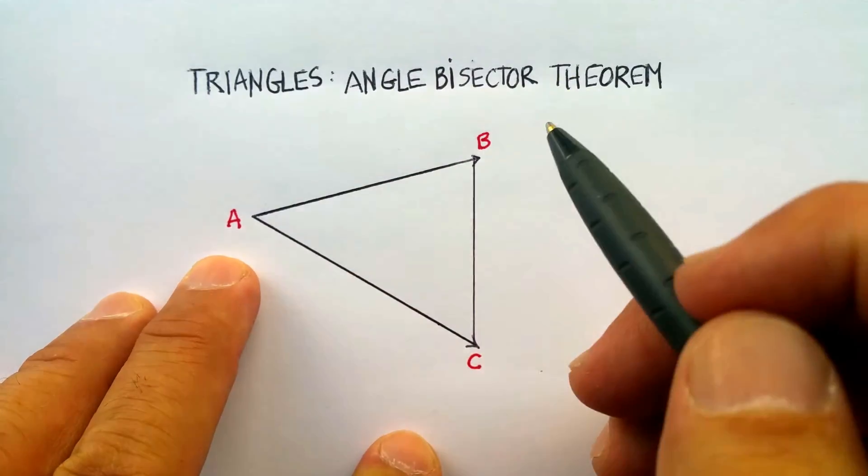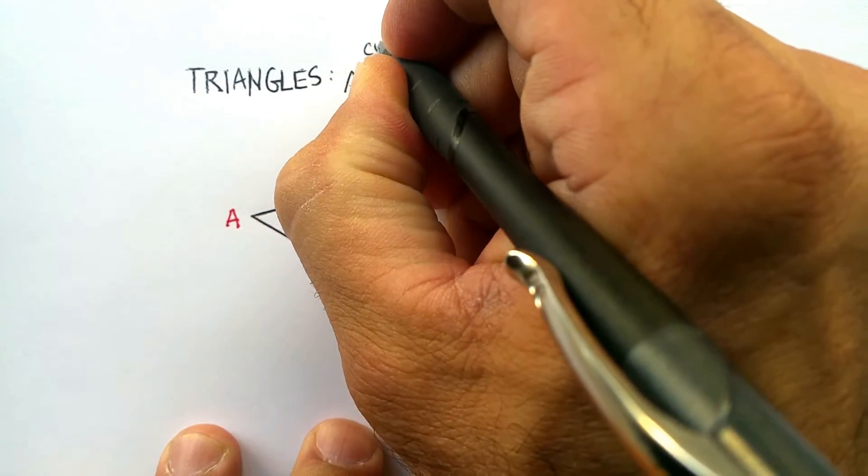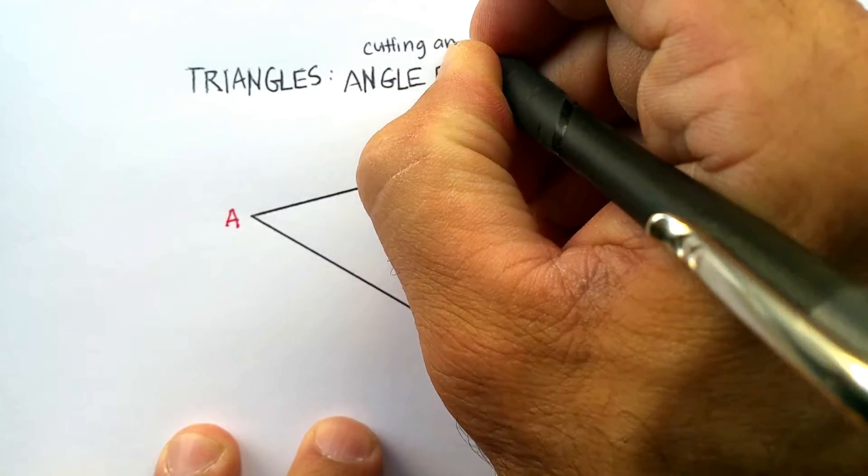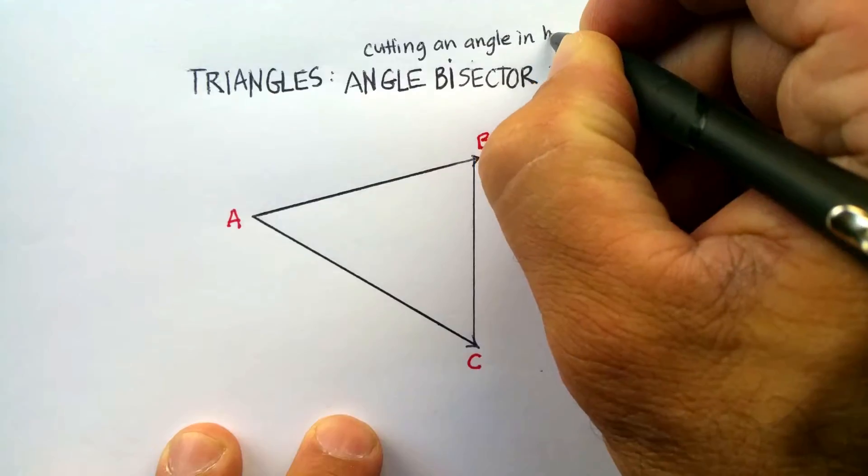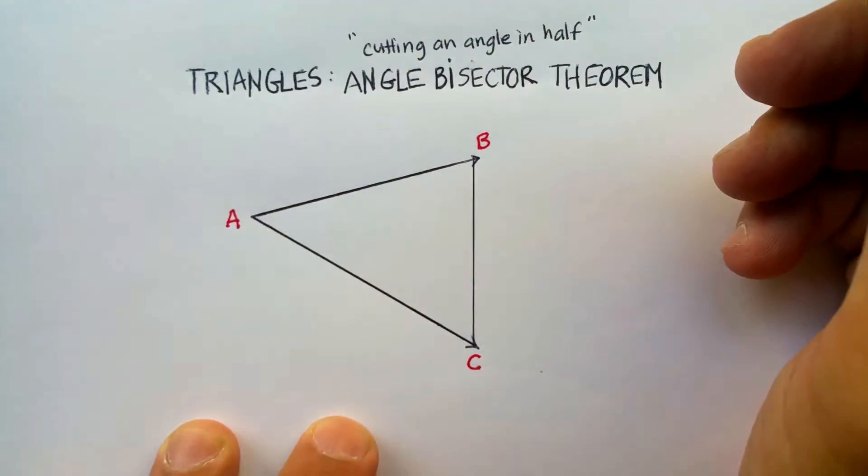Now we know that bisecting something means cutting it in half, right? So basically what we're going to be doing is we're going to be cutting an angle in half, and cutting an angle in half means you're cutting it into two equal halves. So let's take an example.